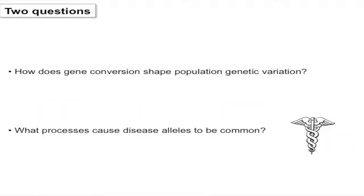Throughout this talk, there are two broad questions to think about. First: how does gene conversion shape population genetic variation? The other, broader question is: how can disease alleles become common in populations? You'd think natural selection would push them to be very rare. So just two things to think about.